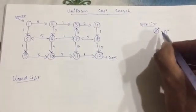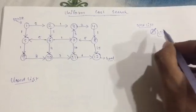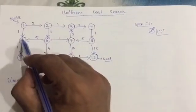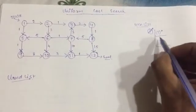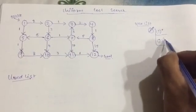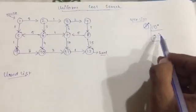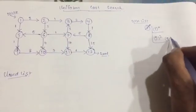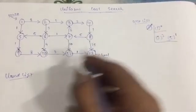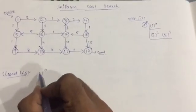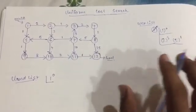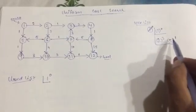From node 1 you can move to node 5 or node 2, so there are two ways. You have to write those in the open list: node 2 with cost 9, and node 5 with cost 1. As you have moved from node 1, include it in the closed list.